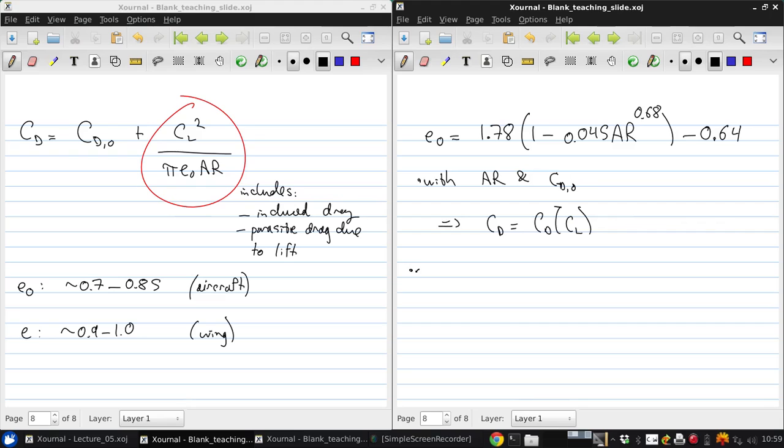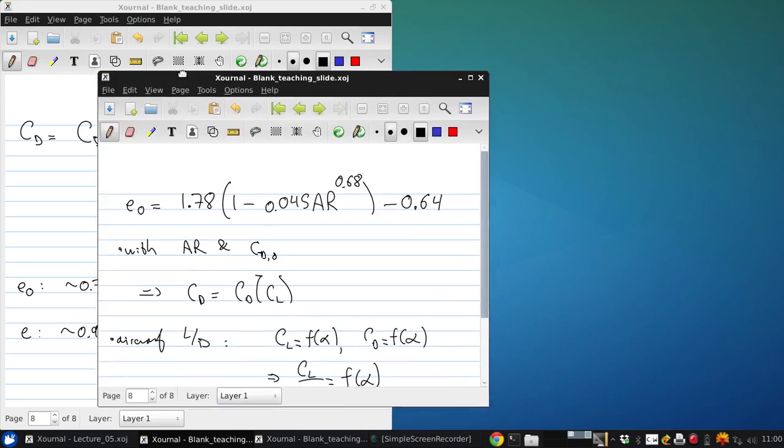So then if you look at the aircraft lift to drag ratio, since CL is a function of alpha and CD is a function of alpha, the ratio must also be some function of angle of attack for a given Mach number, Reynolds number and geometry of course. And since the lift coefficient is proportional approximately to alpha, at least over the linear region, and CD is basically in our model proportional to CL squared, then we would expect there to be an angle of attack for which CL over CD is maximum.